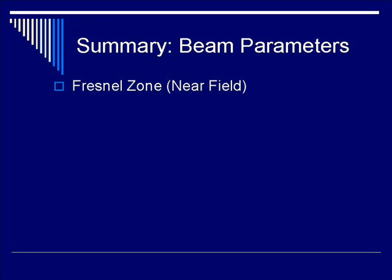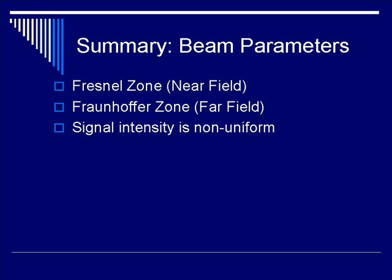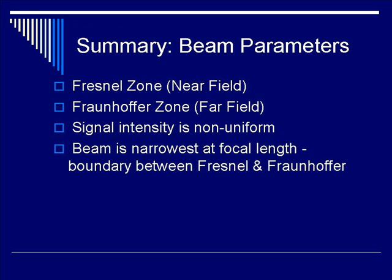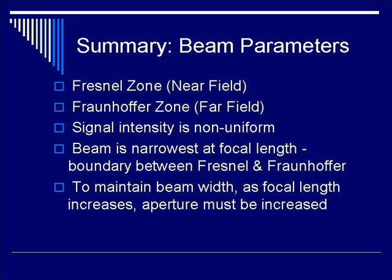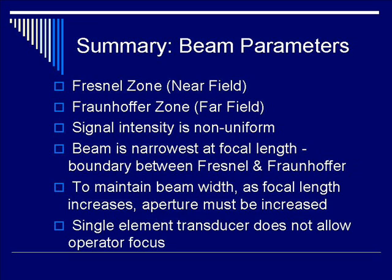In summary, the beam profile contains the Fresnel zone, which is the near field, and the Fraunhofer zone, which is the far field. Signal intensity is non-uniform across the beam, and the beam is narrowest at the focal length — the boundary between the Fresnel and Fraunhofer zones. To maintain the same beam width across the profile, as the focal length increases the aperture must be increased. This is comparable to the F-number concept in photography — as focal length increases, you must increase the lens aperture to keep the F-number constant. Finally, single element transducers do not allow for operative focus.